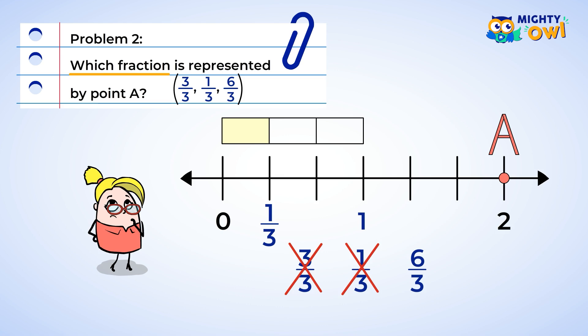Our next option is six-thirds. Let's sketch out where that could be. We know one is the same as three-thirds, so let's make three more marks to get to six-thirds. That looks correct. Point A must be six-thirds.